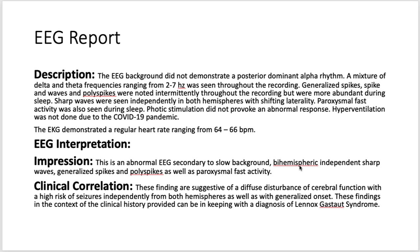I hope you are familiar with Lennox-Gastaut syndrome. If not, you can read up about it — I do have a separate tutorial made a few years ago on Lennox-Gastaut syndrome. I would like to hear from you: how do you report an abnormal EEG? How do you format your EEG report — does it go with description, impression, and clinical correlation, or do you have a better way? I would love to hear from you. Thank you for your attention and I hope to see you in one of the future tutorials.